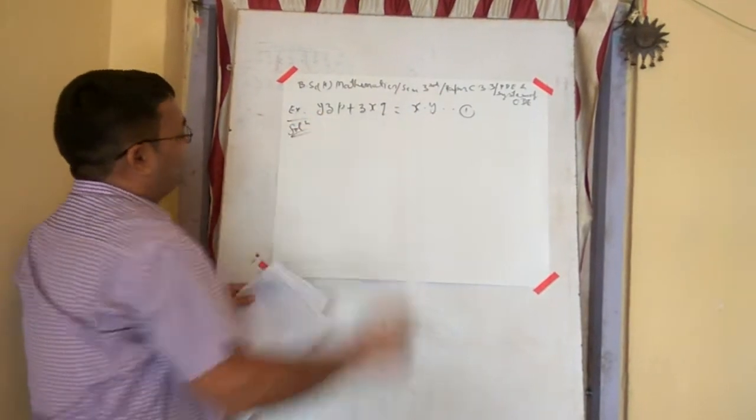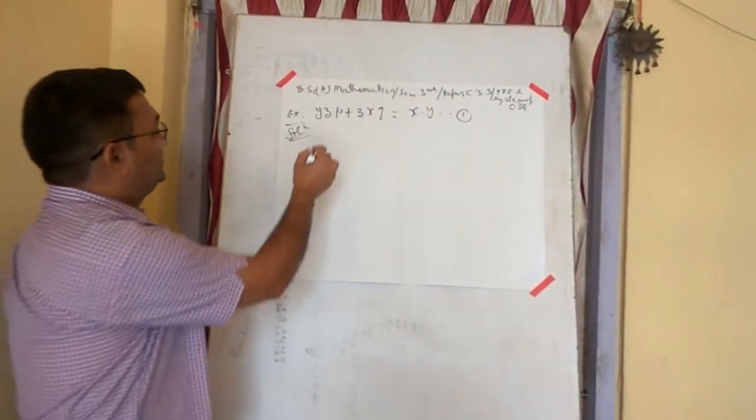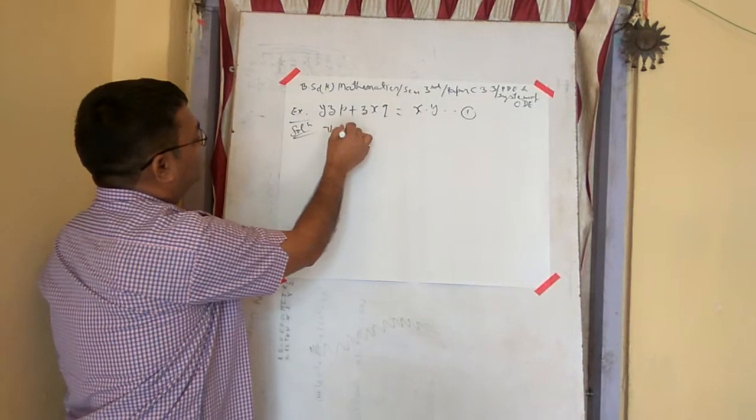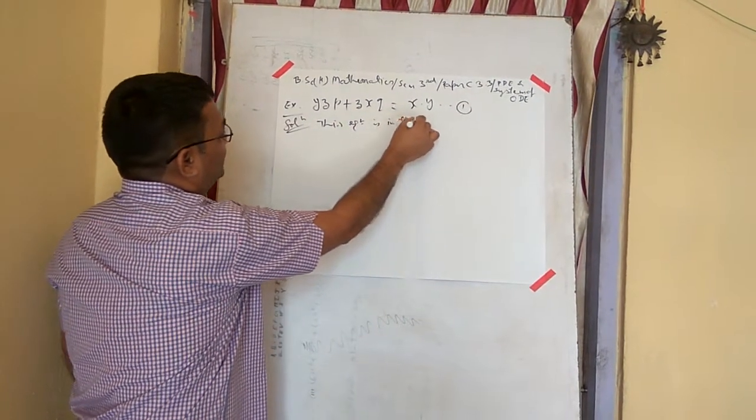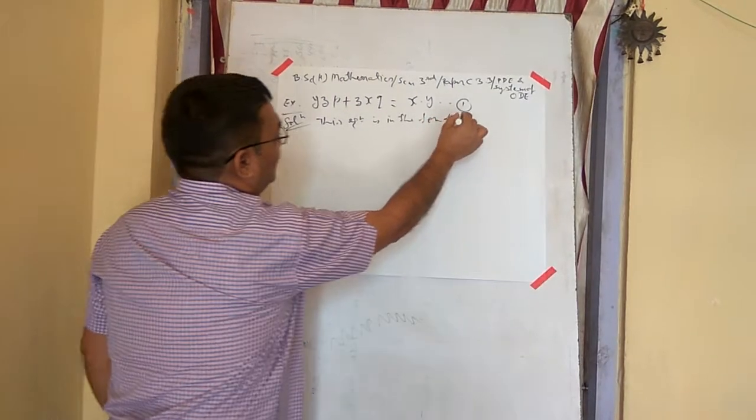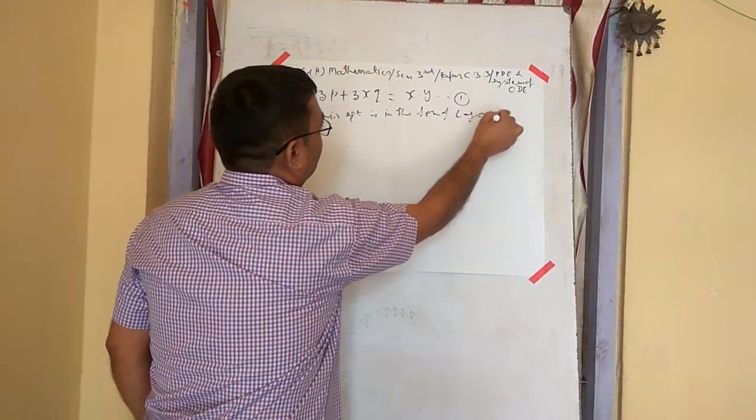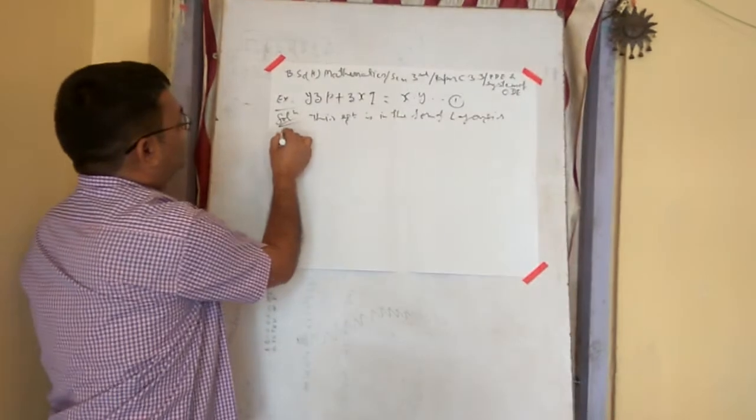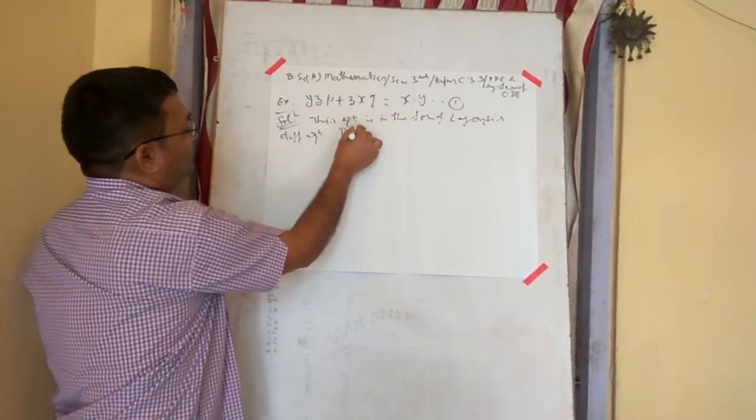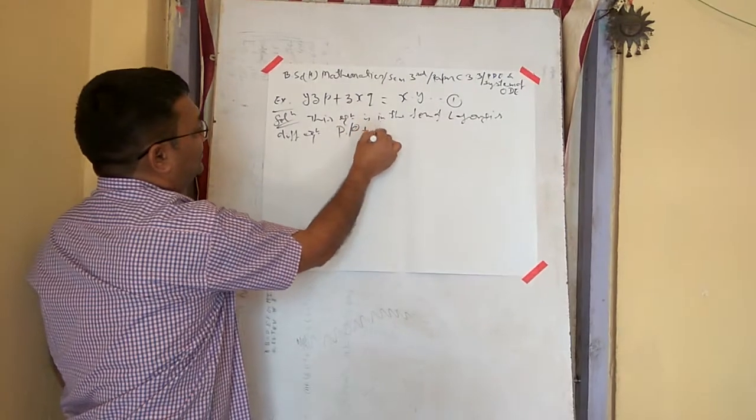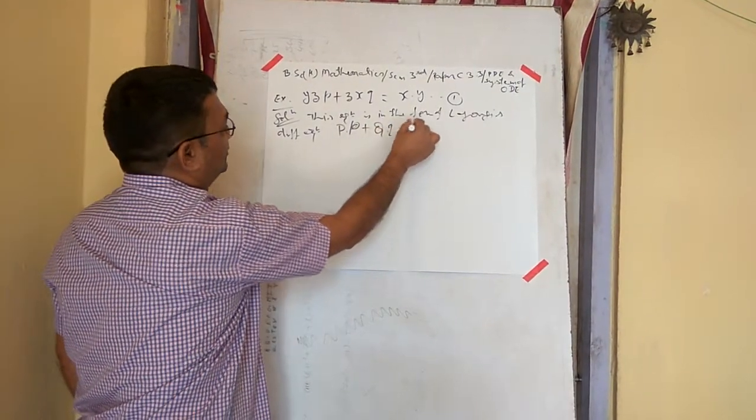Now its solution. We know that this equation is in the form of Lagrange's differential equation. Capital P into small p plus capital Q into small q is equal to R.